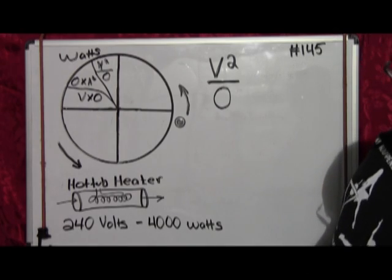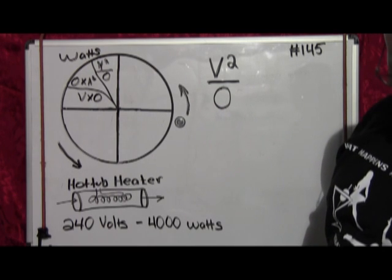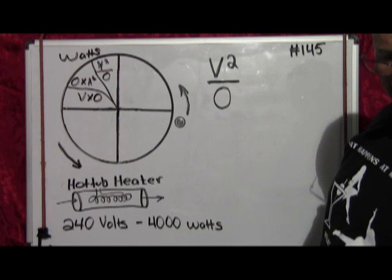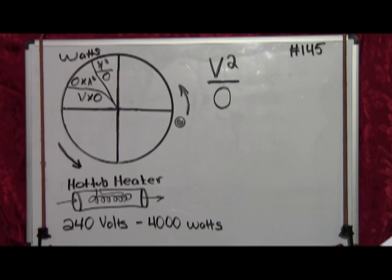We are going to use an inline hot tub heater for our electrical factors. Starting with the watts portion of the formula, the first formula is volts squared divided by ohms equals watts. The only two things you need to know on a new hot tub heater are the voltage and the watts.